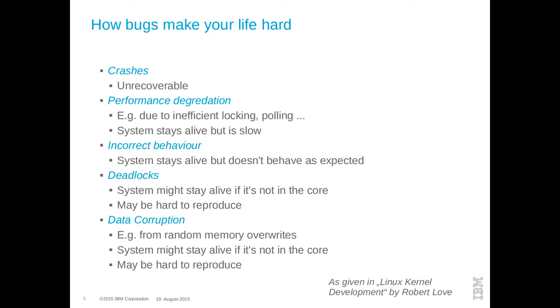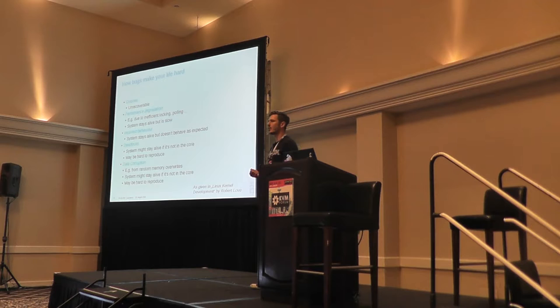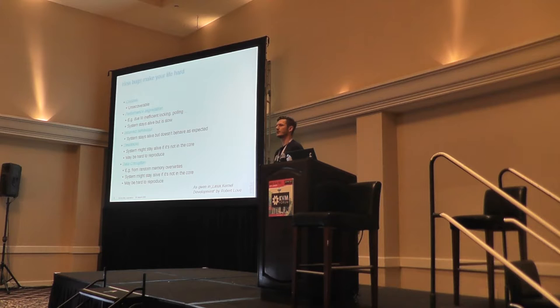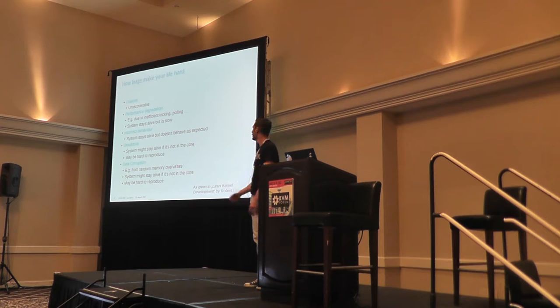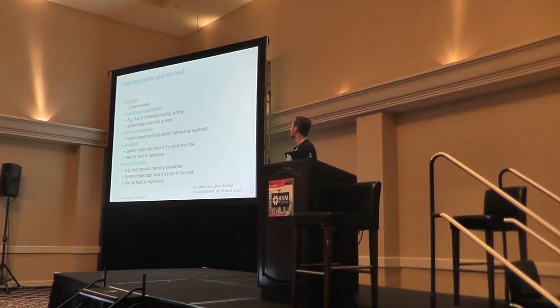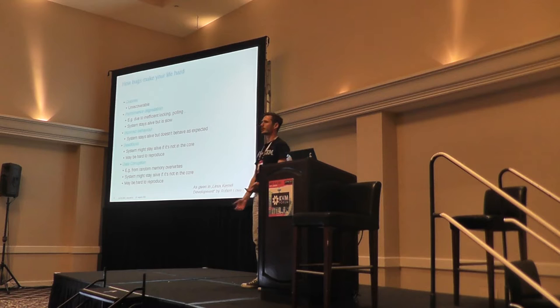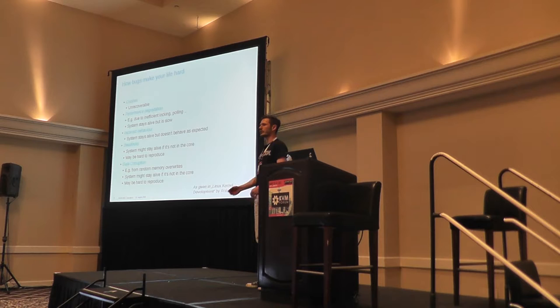These are some categories of bugs — how bugs appear in the wild. I took this from the book by Robert Love. Related to operating systems, we can have bugs that lead directly to system crashes, which is unrecoverable — sometimes just a kernel panic and the system is down. Think about Windows blue screens. Some bugs simply lead to performance degradation, for example due to inefficient locking, busy-state polling, or bad algorithms — the system still works but is too slow.